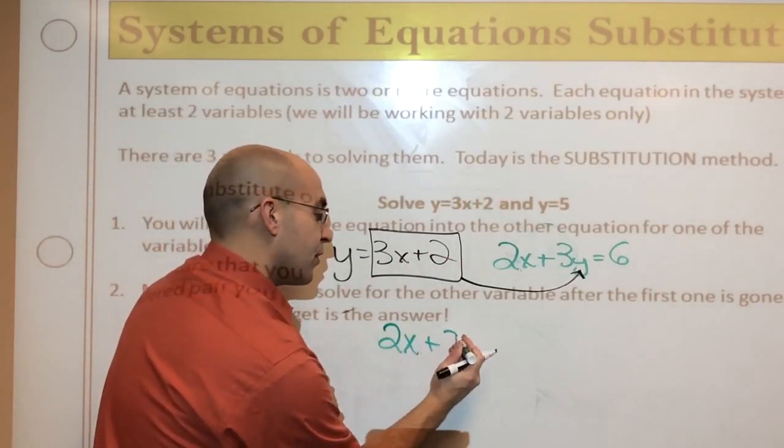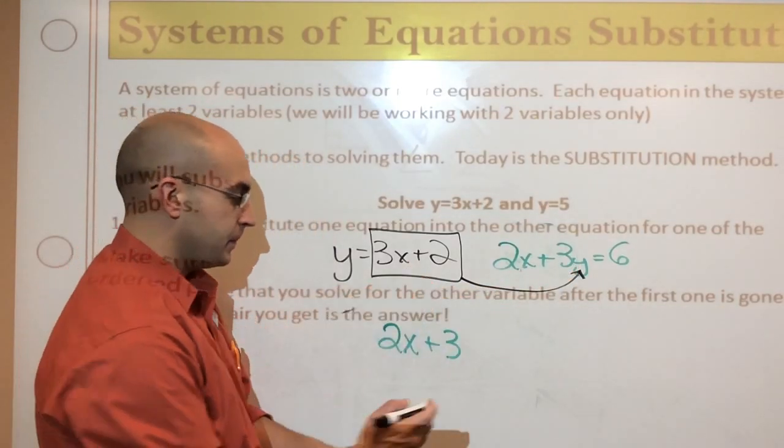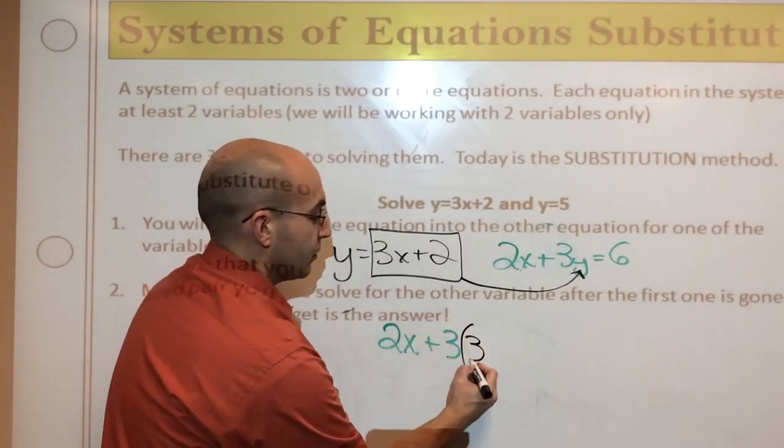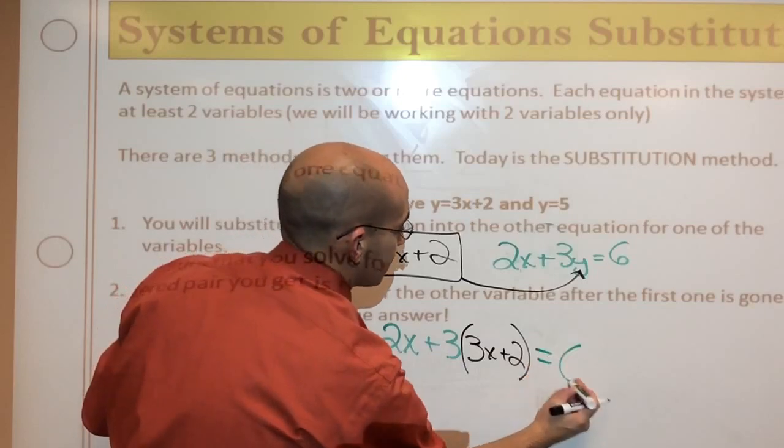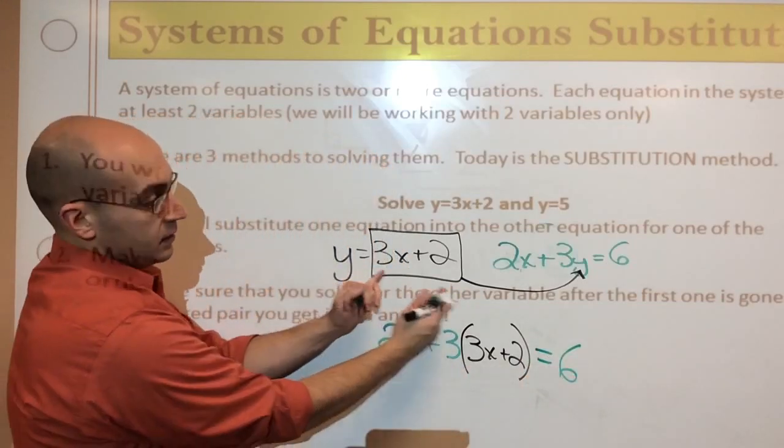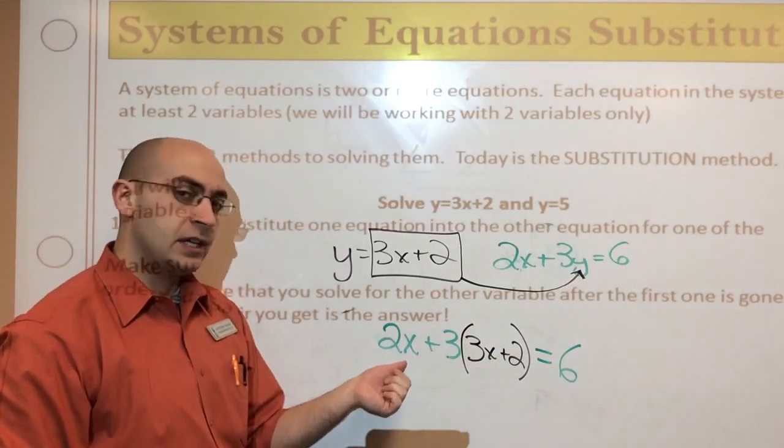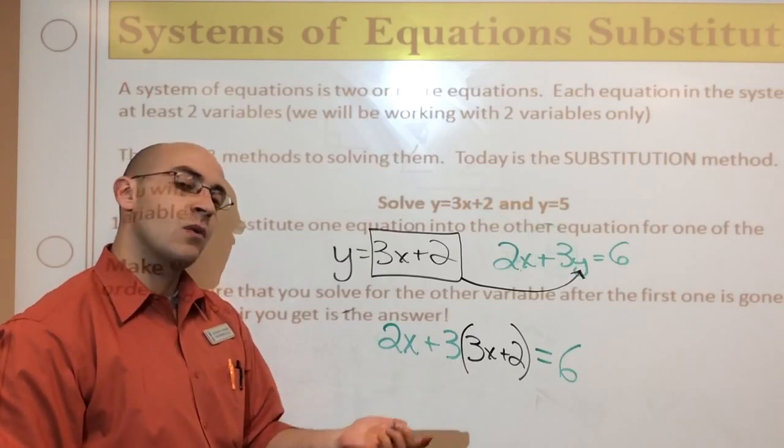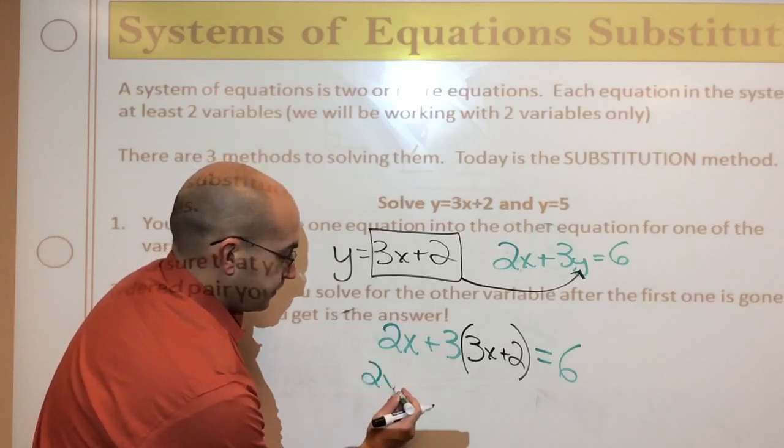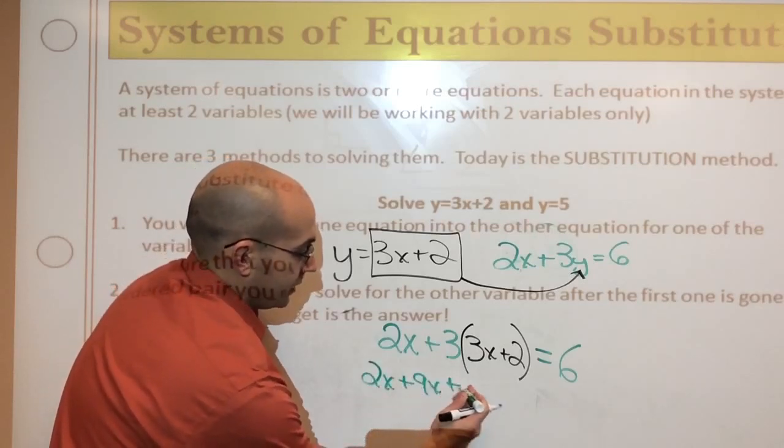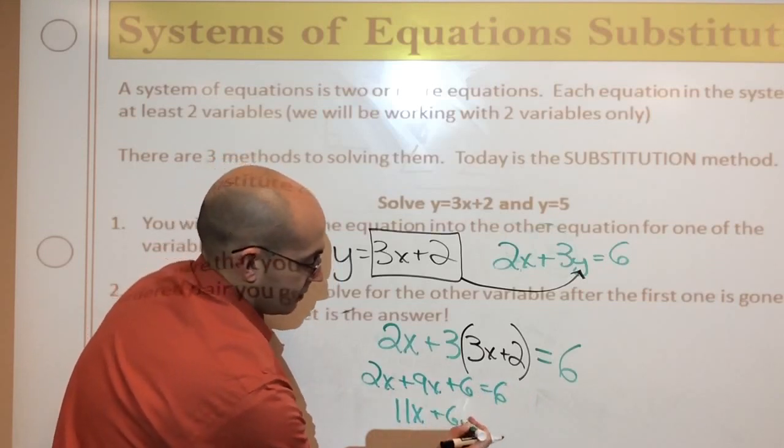I'm going to rewrite this equation with this section in there. So, 2x plus 3. Now, after the 3 is the y. So, that's where I'm going to put this part of it in. Times the quantity. 3x plus 2 equals 6. So, all I did was I substituted something that I knew was y into y. And now, I'm going to solve through. Take a look at this equation though. There's only one variable. It just happens to be in two spaces. But, there's only one variable. I'm able to solve this now because it's only one variable. So, 2x plus 9x plus 6 equals 6. So, I've got 11x here plus 6 equals 6.